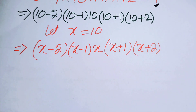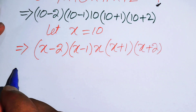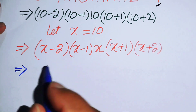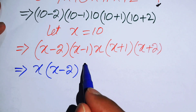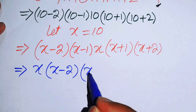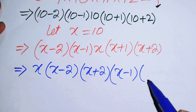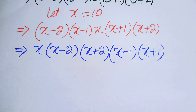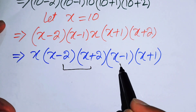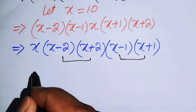After this step, I rearrange the terms and write it as X times (X minus 2)(X plus 2) times (X minus 1)(X plus 1). Now focus on these two pairs of terms — we can apply a nice formula here.